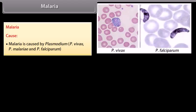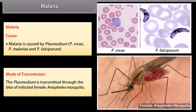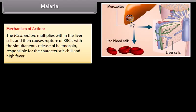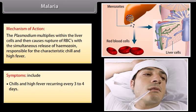Malaria is caused by Plasmodium — P. vivax, P. malaria, and P. falciparum. The plasmodium is transmitted through the bite of an infected female Anopheles mosquito. The plasmodium multiplies within the liver cells and then causes rupture of RBCs with the simultaneous release of haemozoin, responsible for the characteristic chill and high fever. Symptoms include chills and high fever recurring every 3 to 4 days, and fatigue.